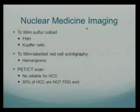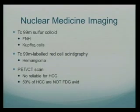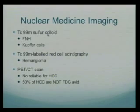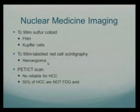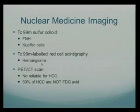For nuclear medicine imaging, there are several different types. Technetium-99 sulfur colloid will help with the diagnosis of FNH, because FNH contains Kupffer cells that will pick up the sulfur colloid. This test can help confirm FNH versus adenoma. The other test is technetium-99 labeled red cell scintigraphy, used mostly for hemangioma. Hemangioma has a characteristic centripetal fill-in on CAT scan, but if there is doubt, this nuclear medicine study is a good option.